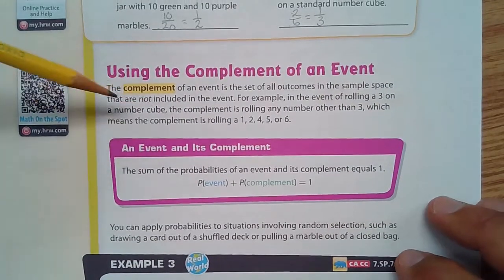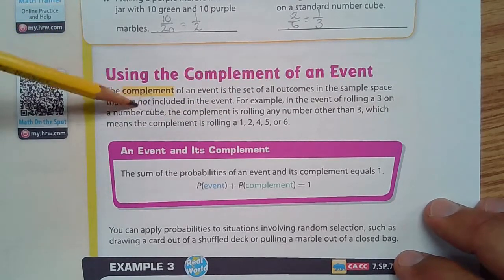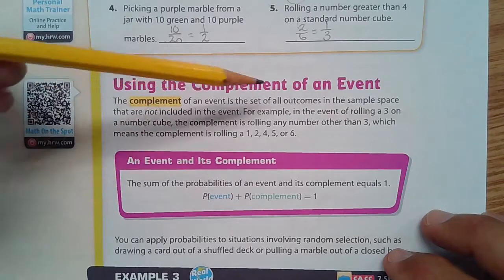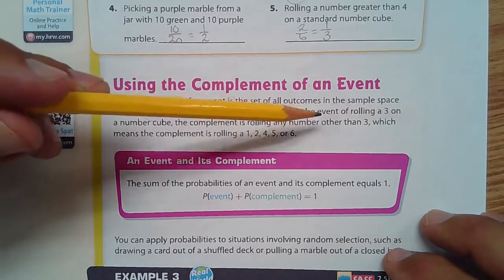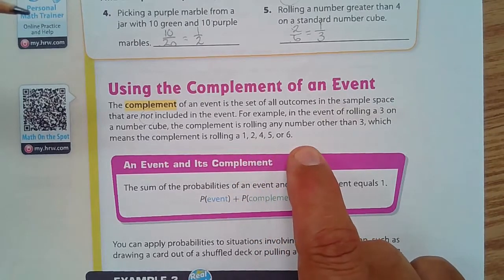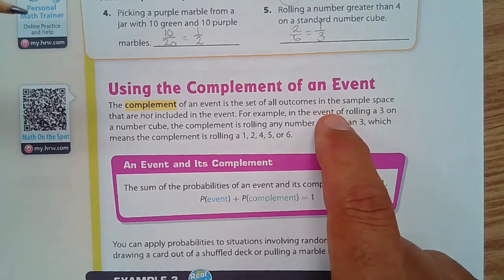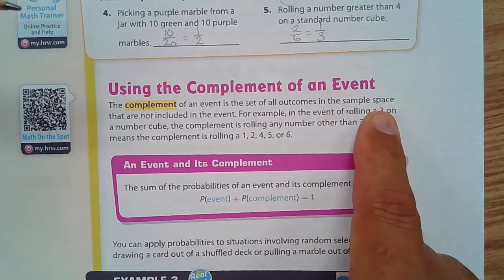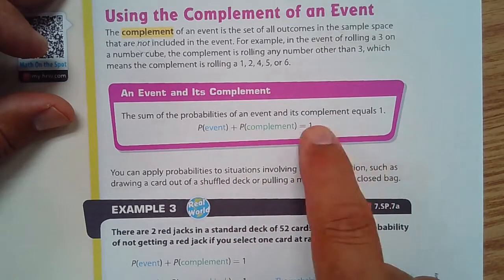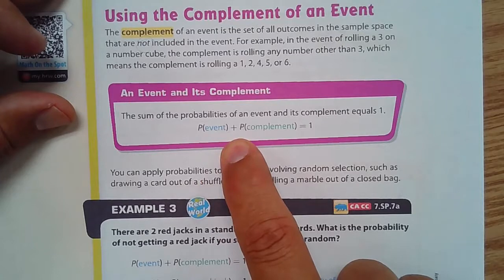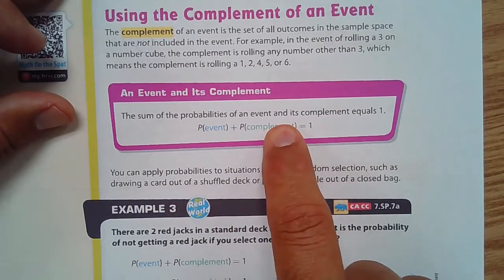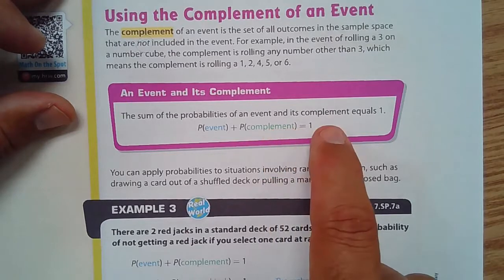Now let's talk about the complement of an event. The complement of an event is the set of all outcomes in a sample space that are not included in the event. For example, the event of rolling a three on a number cube: the complement is rolling any number other than three — rolling a one, two, four, five, or six. The sum of the probabilities of an event and its complement always equals one.